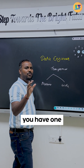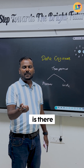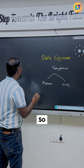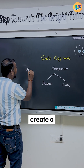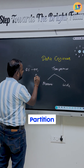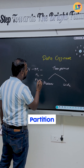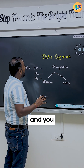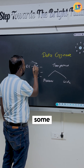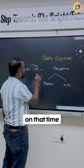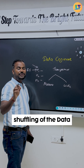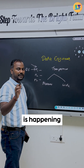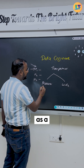Let's say you have one CSV file and you are going to load that into a data frame. The data frame will create multiple partitions. Let's say you got three partitions and you are performing some operations on them. At that time, there will not be any shuffling of the data. Whenever there is no shuffle of the data happening, we call it a narrow transformation.